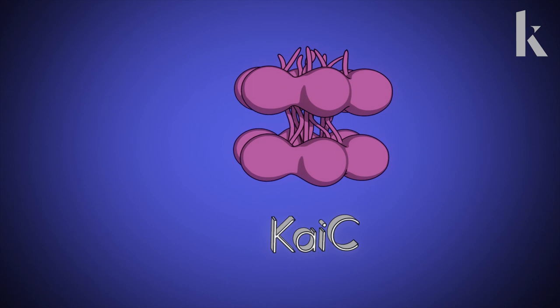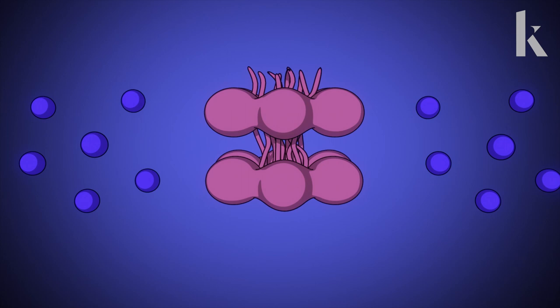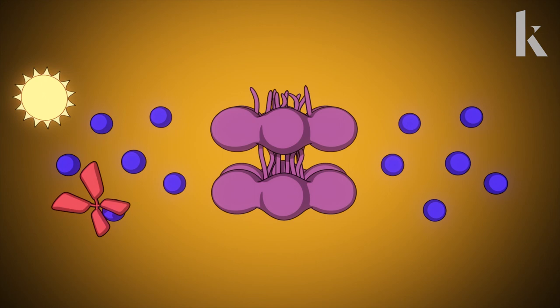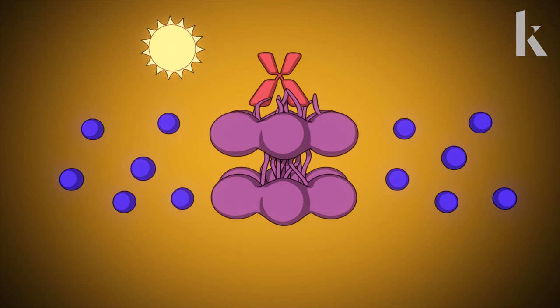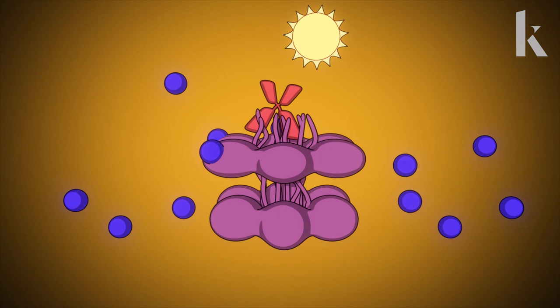Kai-C is the clock's centerpiece. It is shaped like two donuts stacked on each other. At dawn, Kai-C's donuts are loosely stacked. Enter Kai protein number two, Kai-A. Kai-A grabs onto little levers sticking out of Kai-C, deforming its top donut.